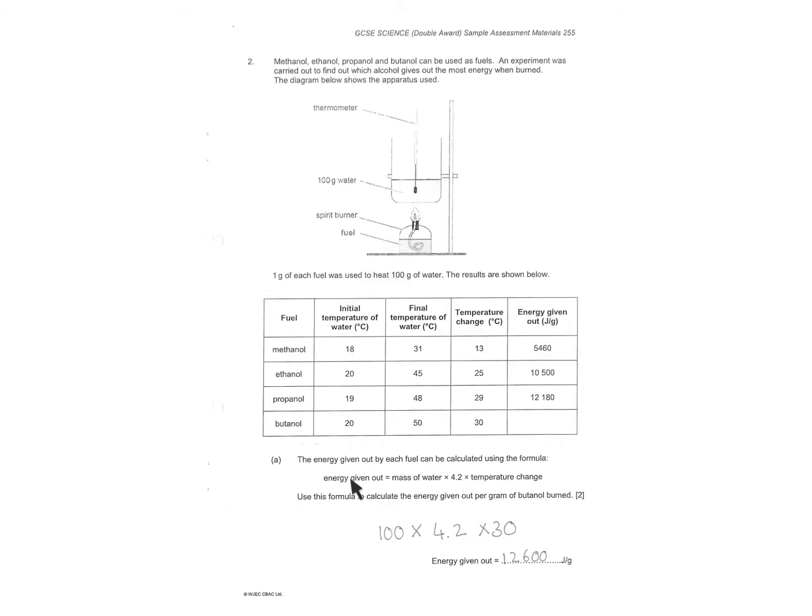Bit of information here then. You had to use what was given to you. Mass of water was 100. 4.2 was constant. Temperature change of butanol was that. Times it all together and you should have got that value. Nice two marks for inputting values into an equation.